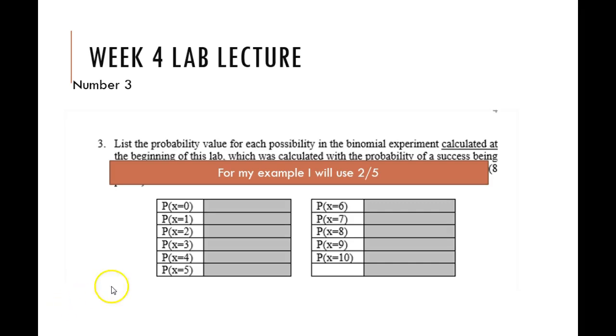Now, if you remember, on number three, they want us to list the probability value for each possibility in the binomial experiment calculated at the beginning of the lab.